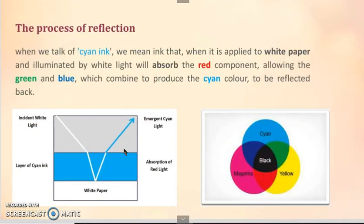The process of reflection. When we talk of cyan ink, we mean ink that when it is applied to white paper and illuminated by white light, will absorb the red component, allowing the green and blue which combine to produce a cyan color to be reflected back. This is the layer of cyan ink and this is white paper. When white light is incident on it, it absorbs the red light. And when it emits, it emerges as cyan light.